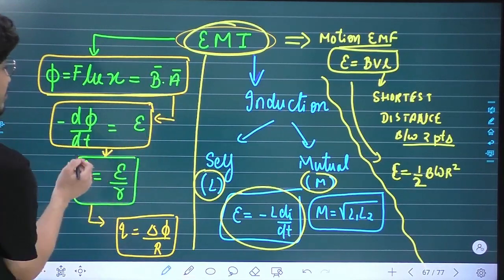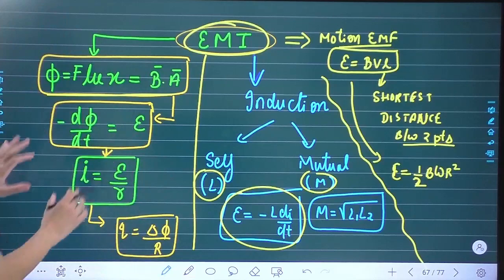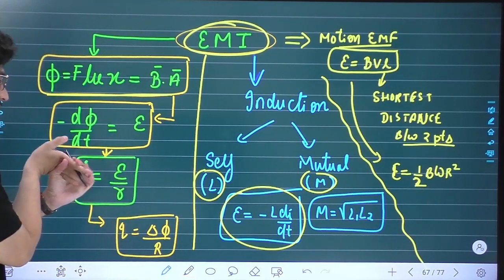EMI - I have divided into flux. Flux means B dot A, it's called B into A into cosine. So I differentiate it, so E comes, EMF comes.